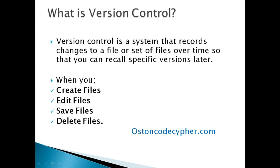Version control is a system that records changes to a file or set of files over time, so that you can recall specific versions later — for example, when you create, edit, save, or delete files.